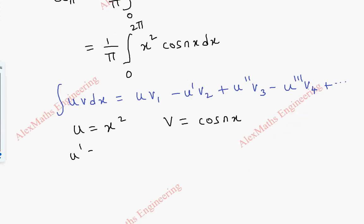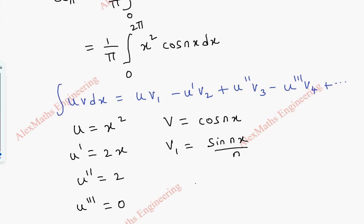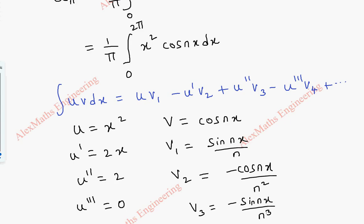u' becomes 2x. u'' is 2 and u''' is 0. Then v₁ is sin nx by n — when we integrate cos nx, we get sin nx by n. Then v₂ is minus cos nx by n squared, and v₃ is minus sin nx by n cubed. Since u''' is 0, we don't need v₄.